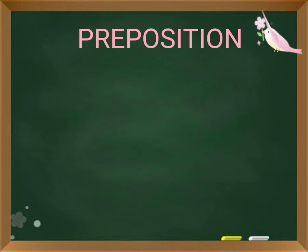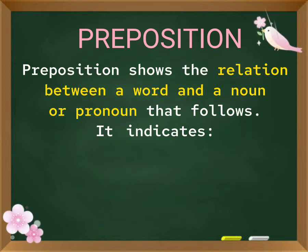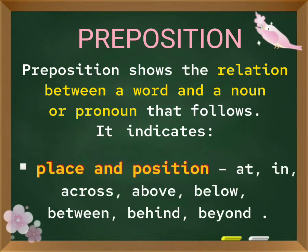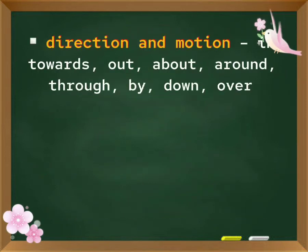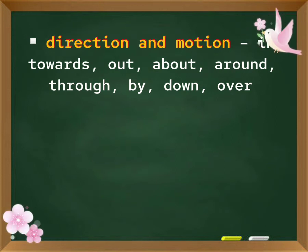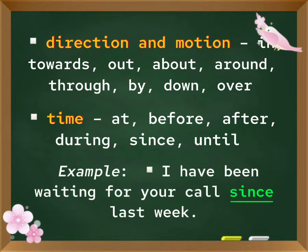Preposition. A preposition shows the relation between a word and a noun or pronoun that follows. It indicates place and position: at, in, across, above, below, between, behind, beyond. Direction and motion: in, towards, out, about, around, through, by, down, over. Time: at, before, after, during, since, until. Example: I have been waiting for your call since last week.